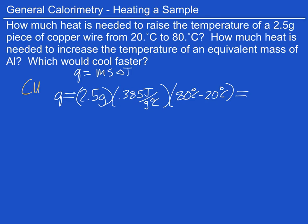As we can see here, the degrees Celsius from these will cancel out with that. The grams will cancel out and we'll be left with an answer in the units of joules. So we're going to round this to 2 sig figs because of the 2.5 grams and also the temperatures have 2 sig figs. So we get 58 joules is the amount needed to heat the copper wire.